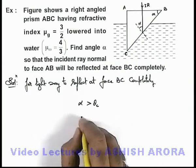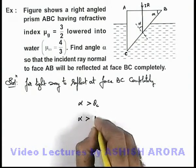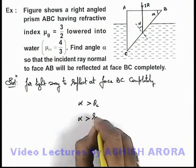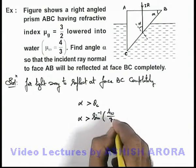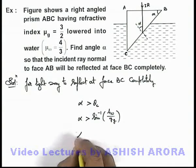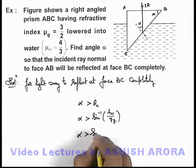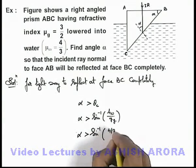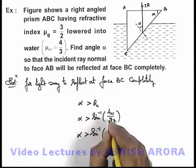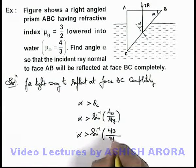The critical angle for the glass-water interface can be written as sine inverse of μ of water upon μ of glass. Substituting the values, alpha must be more than sine inverse of 4/3 divided by 3/2.